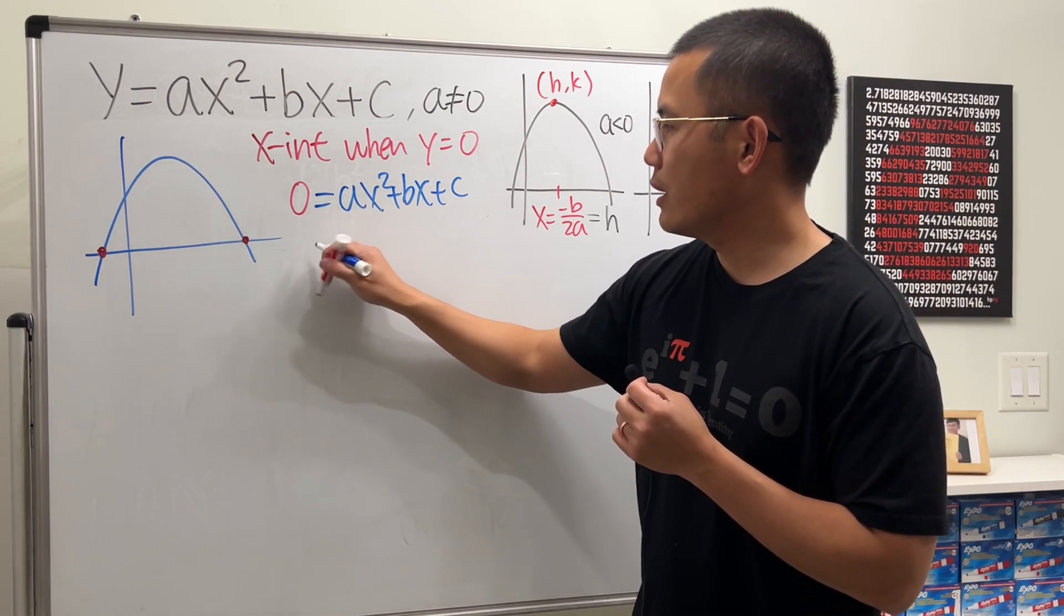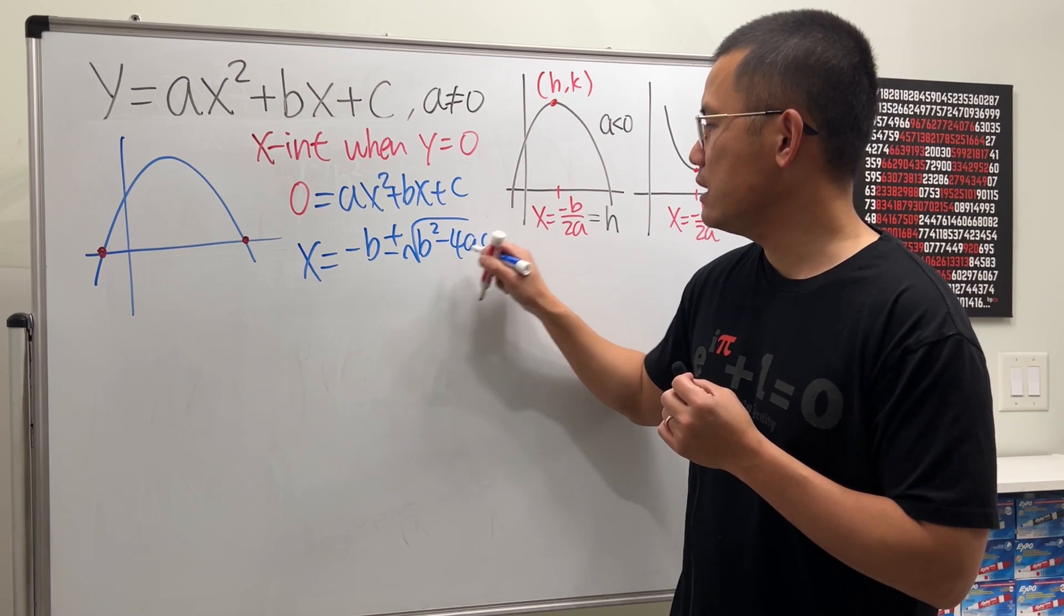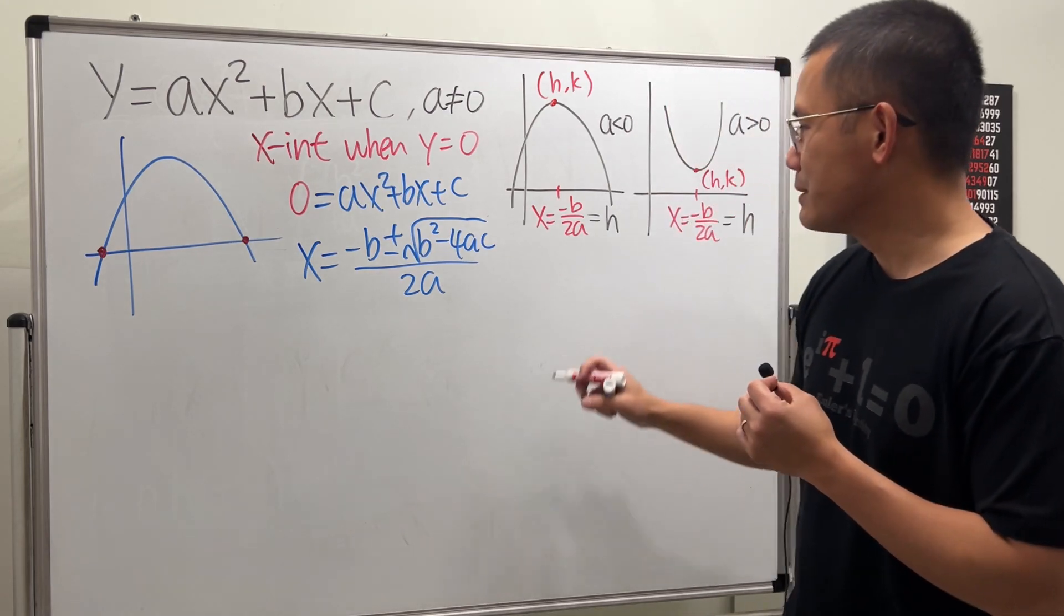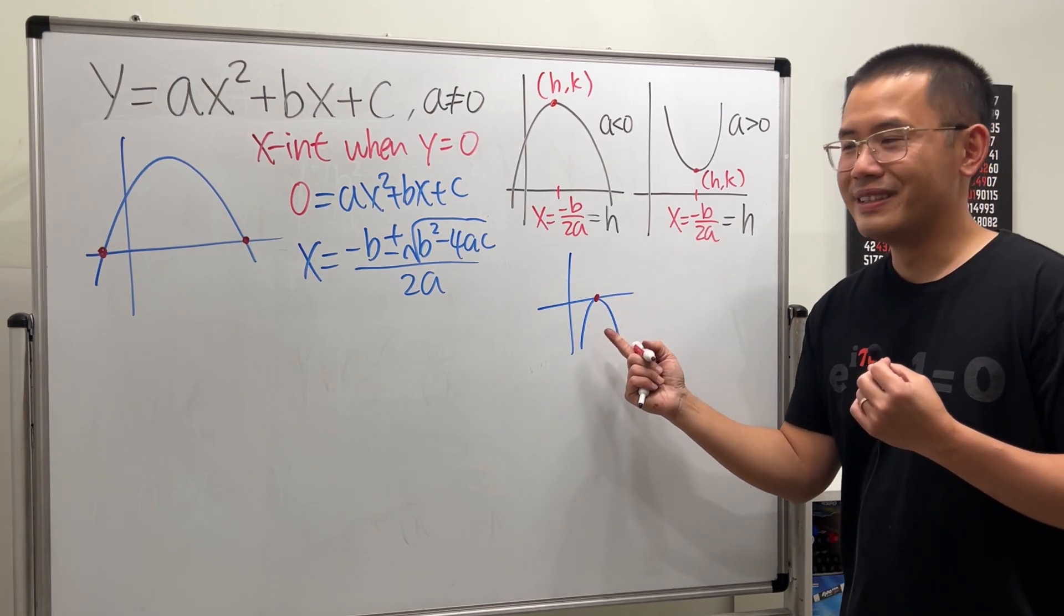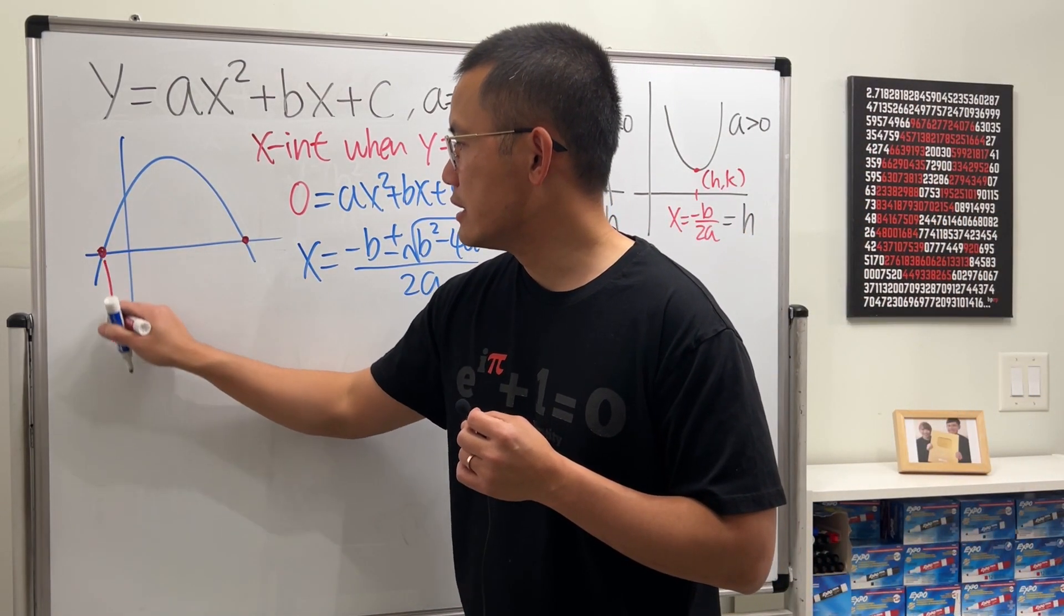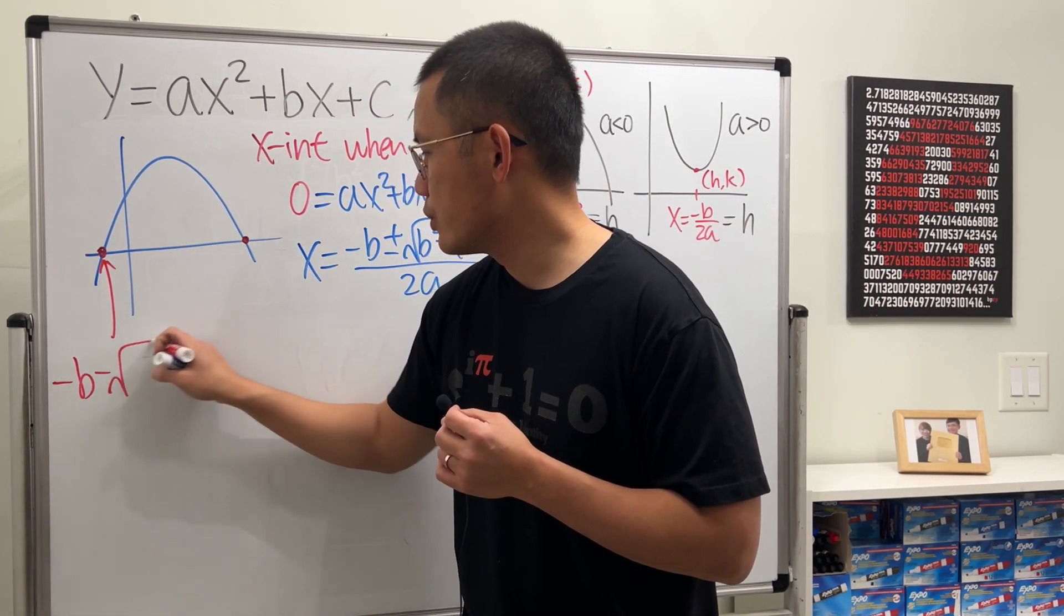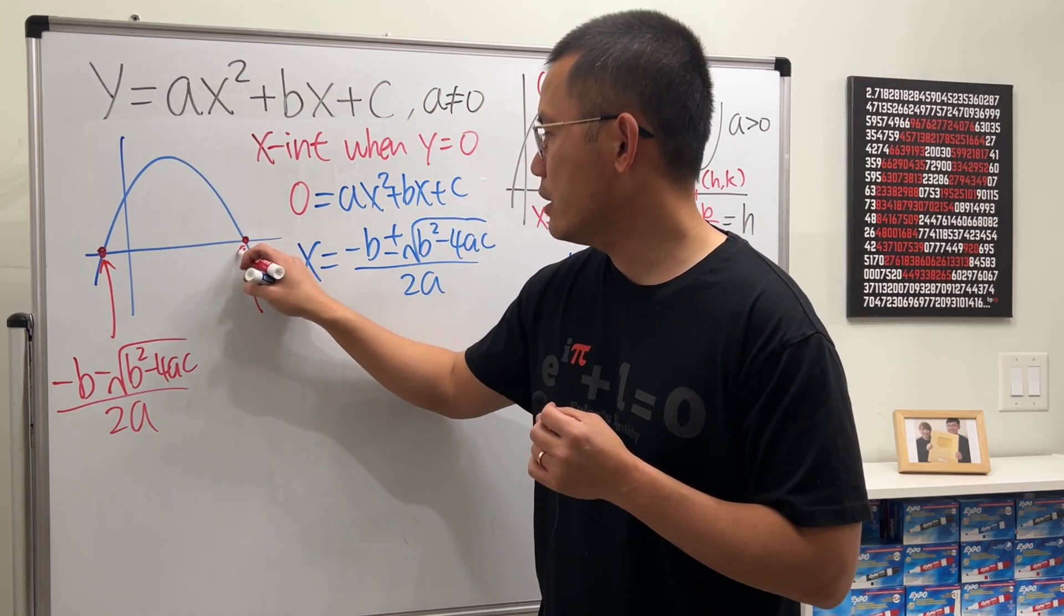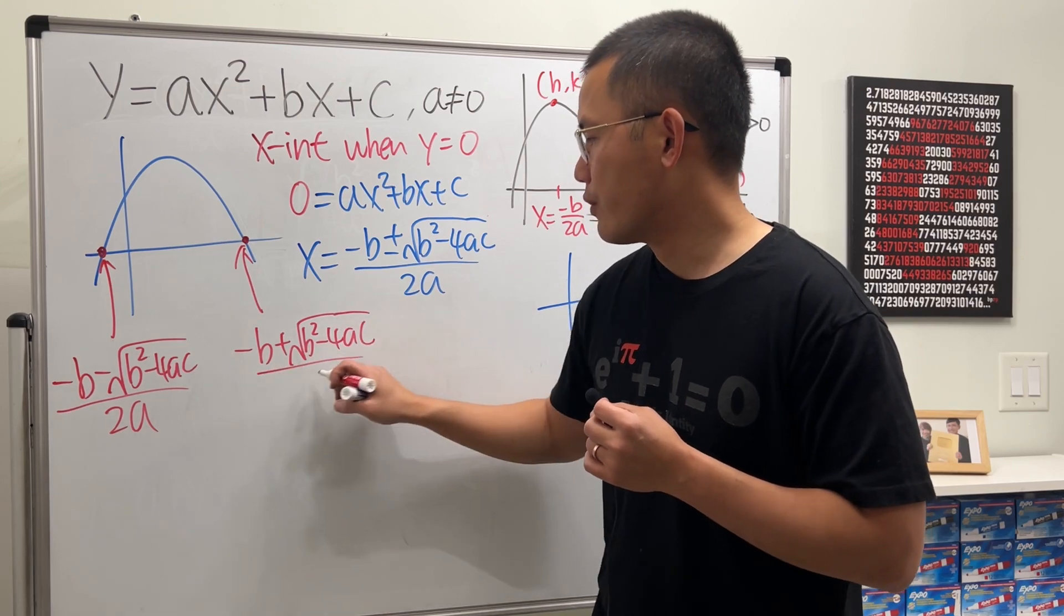If we have a parabola like this, here is the x-intercept, and that's when y is equal to 0. If you put that in here, we get 0 equals ax squared plus bx plus c. And since we have two of them, we can use the quadratic formula to find that out. And if you do so, x is equal to negative b plus or minus square root of b squared minus 4ac all over 2a.